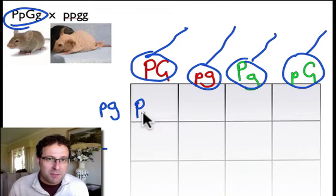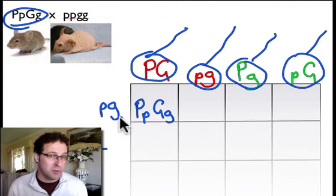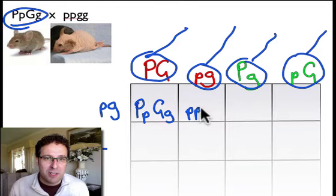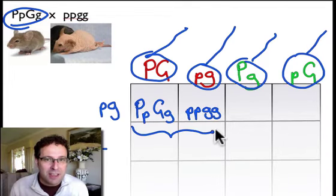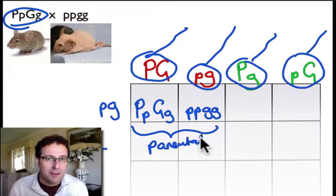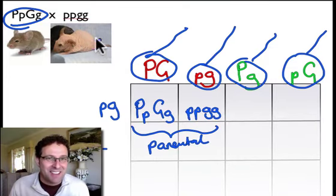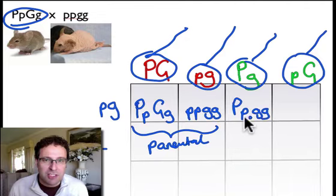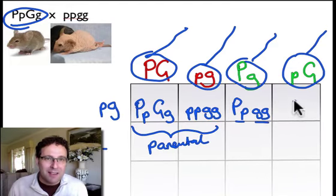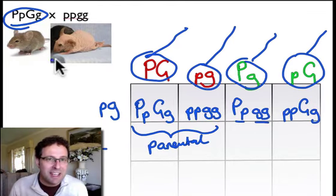When fertilization happens: if this sperm fertilizes this egg we end up with a zygote that's big P little p, big G little g; if this sperm fertilizes this egg we end up with little p little p, little g little g. Notice that those are the same genotypes as the parents — their phenotypes will be the same as well. We call these parental phenotypes. These ones are going to have normal skin and a normal gait, and these ones — just like their mom — are going to have prune skin and the grasshopper gait. But the other two combinations give big P little p, little g little g — normal skin but the grasshopper gait — and little p little p, big G little g — prune skin but a normal gait. Neither of the parents is like those.